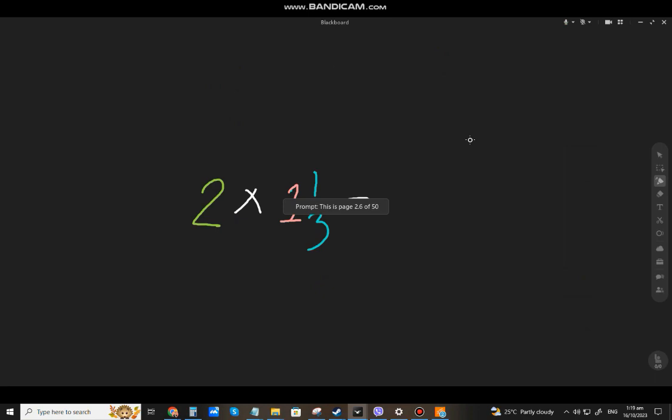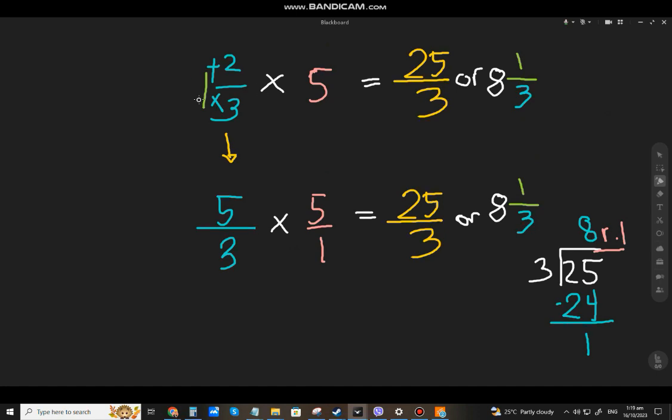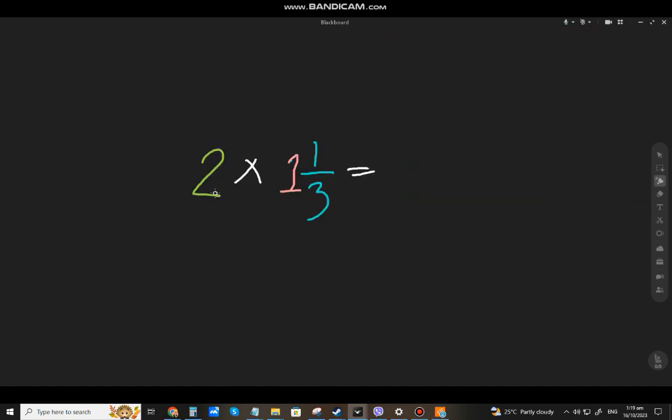Let's have the second example. What if we have 2 times 1 and 1 third? In the first example, the mixed number came first. Then the second was a whole number. So, I'll just switch it. What if the whole number times the mixed number?